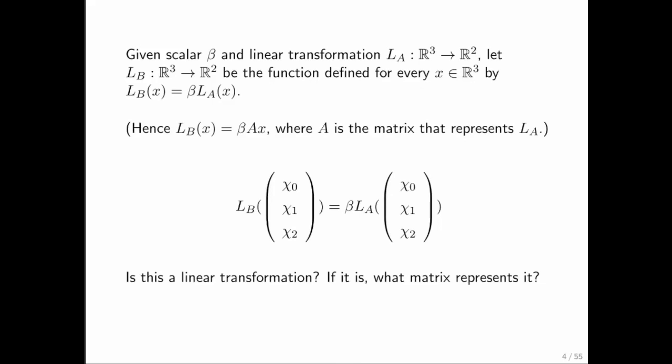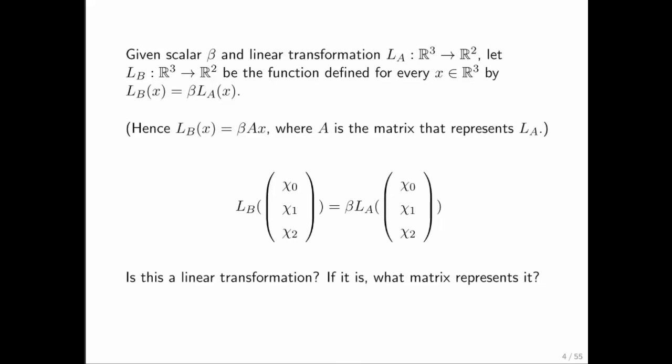As we have been doing all along, we're going to compute a matrix that might represent L sub B, and then use that to verify whether L sub B actually is a linear transformation. Matrix A is 2 by 3, because the linear transformation starts with a vector of size 3 and outputs a vector of size 2. So let's expose the elements of matrix A and ask whether we can find a matrix representing L sub B in terms of those elements.